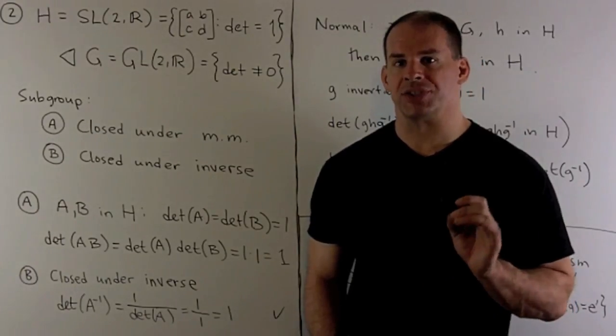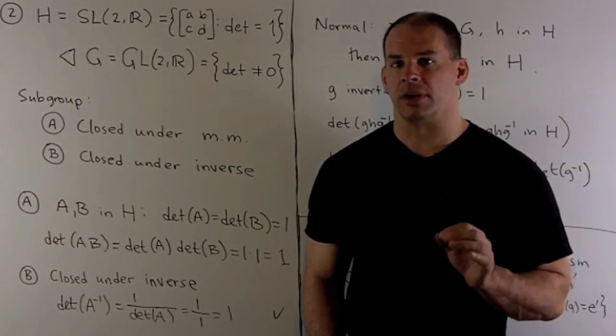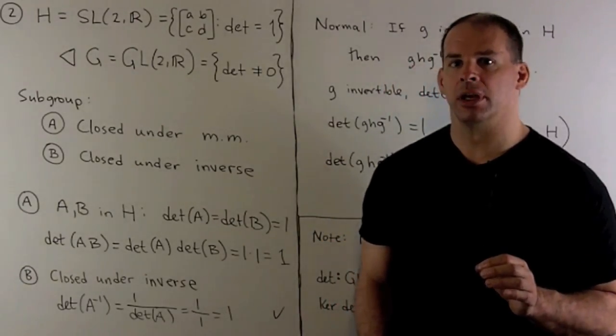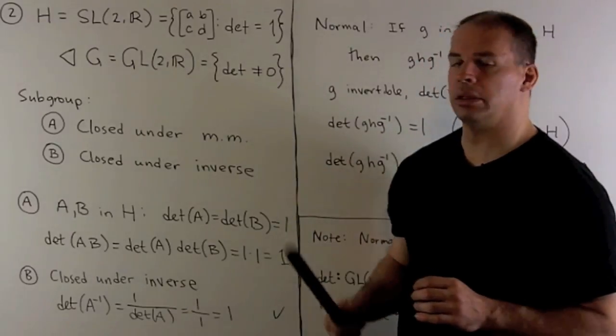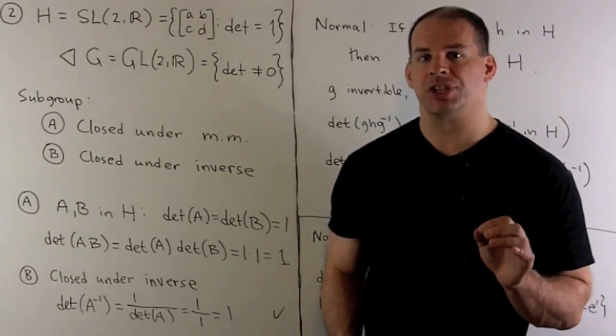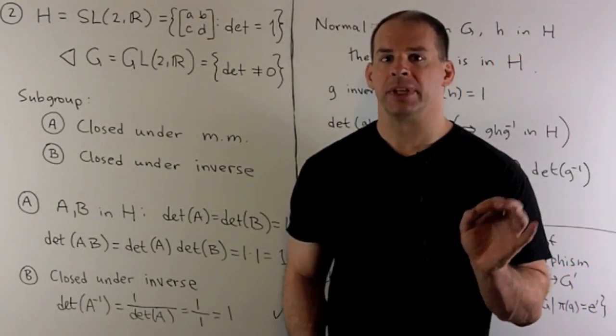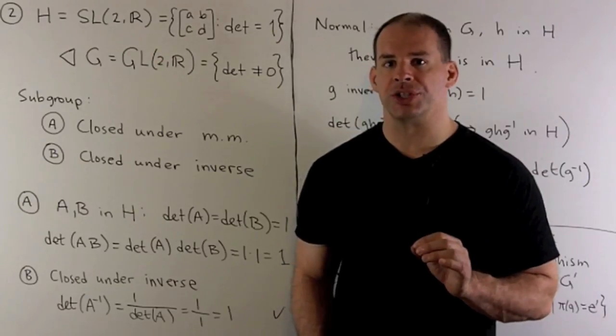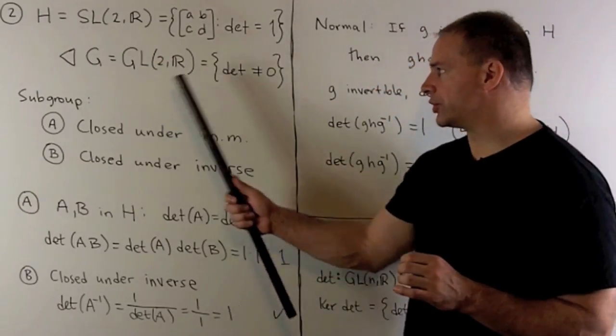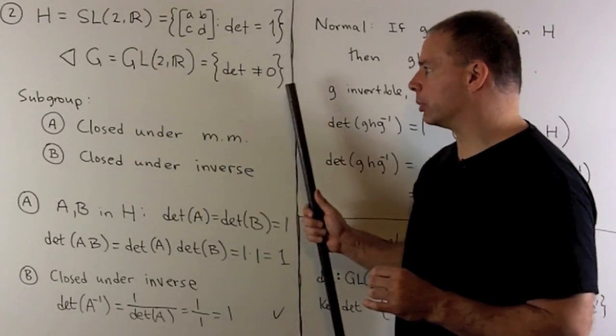Now, let H be SL(2,R), the set of real two-by-two matrices with determinant equal to one. We want to show that H is a normal subgroup of G equal to GL(2,R), the group of real two-by-two matrices with non-zero determinant. So these are our invertible matrices.